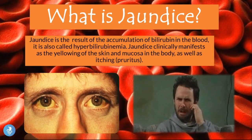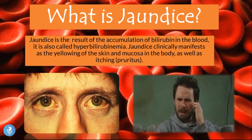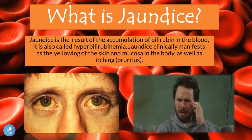What is jaundice? Jaundice is the result of the accumulation of bilirubin in the blood. It is also called hyperbilirubinemia — hyper meaning high, bilirubin referring to the amount of bilirubin in direct or indirect forms, and -emia from the word blood — meaning a high amount of bilirubin in the blood. Jaundice clinically manifests as the yellowing of the skin and the mucosa, as well as itching, or pruritus.